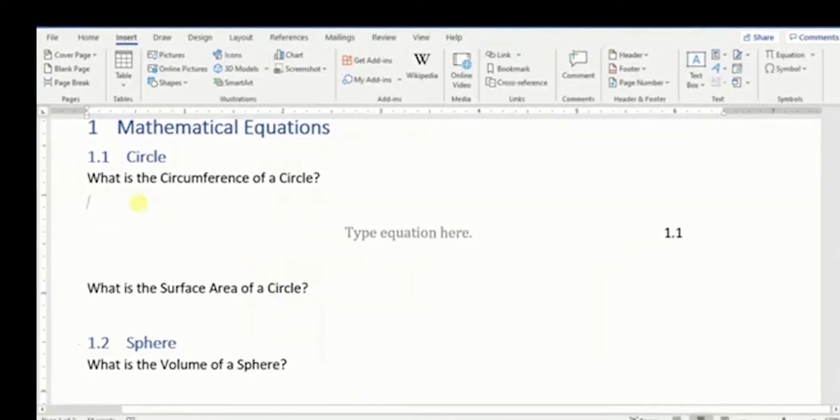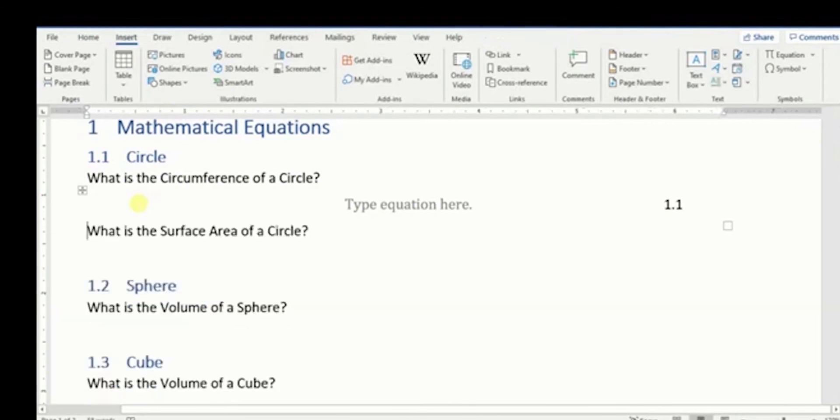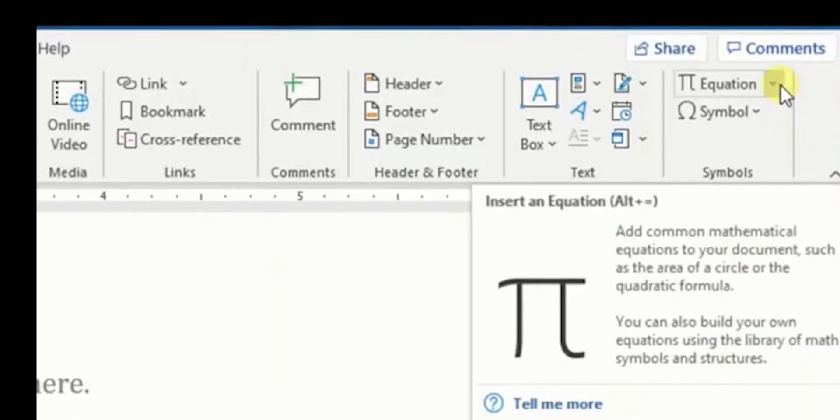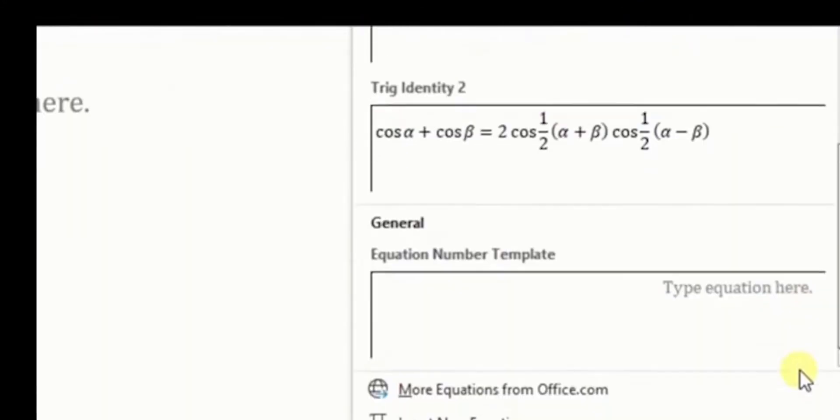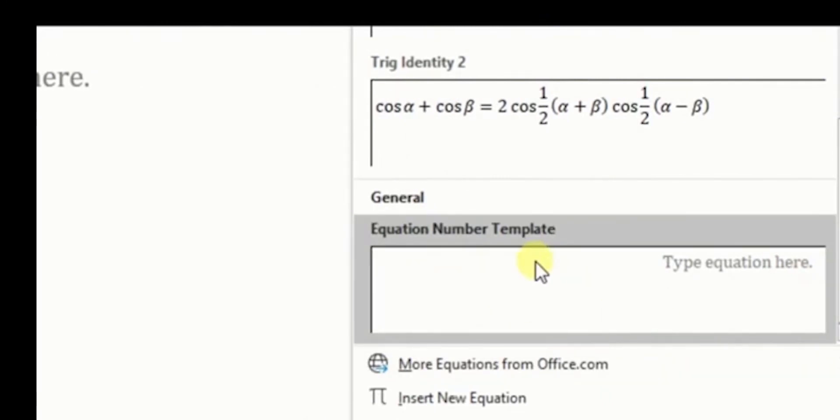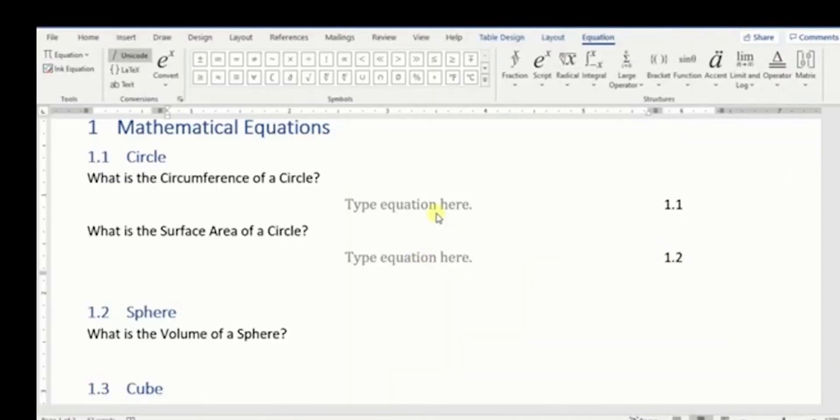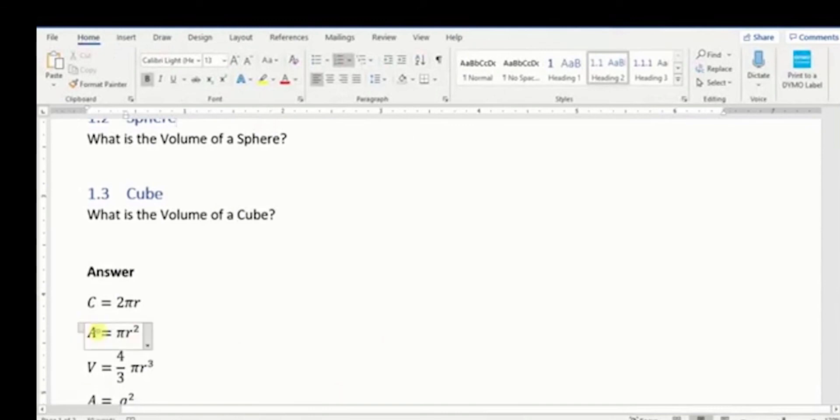We have saved our template now. Anytime we want to enter an equation in our document, I can just come to the place where I want my equation, go to insert, select the arrow, and scroll down to where you find your template. I'm going to click on it. I can come here, click on it, and then do C equals 2πr.